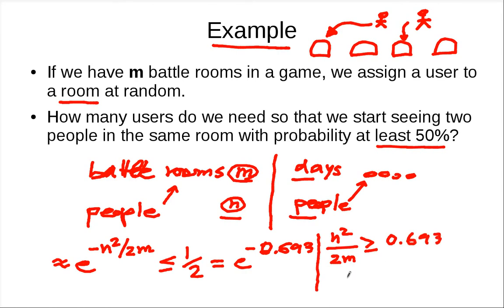And if you do some calculation, then you know that n has to be at least, this has to be multiplied by 2. So it's going to be 1.1386 times m square root. So if n is at least this, then you know that you have this with this probability.